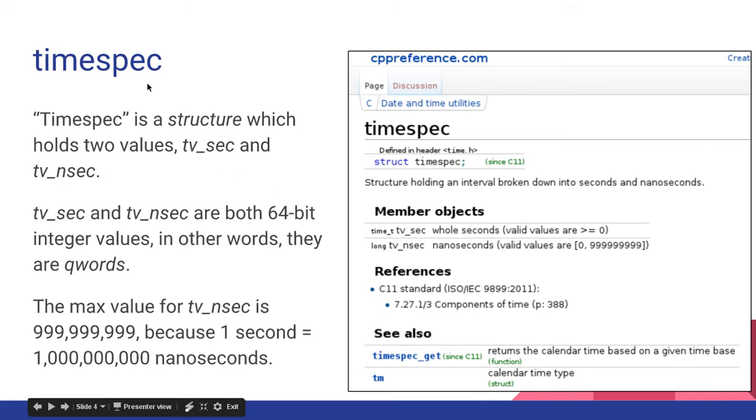So I'm also going to look at timespec. So timespec is a structure which holds 2 values, tvsec and tvnsec. Here's just a screenshot of cppreference.com.